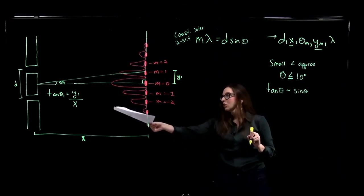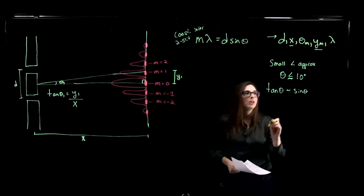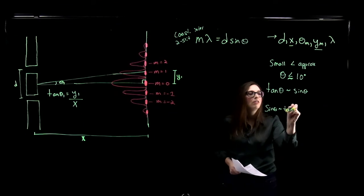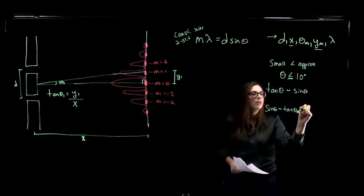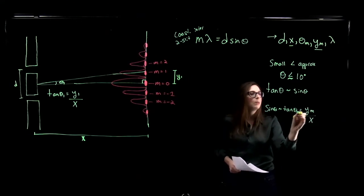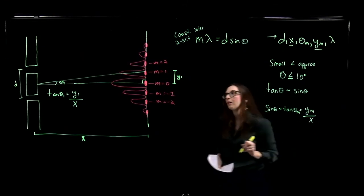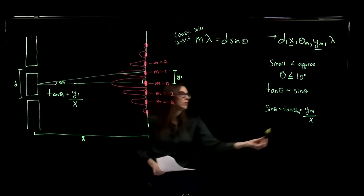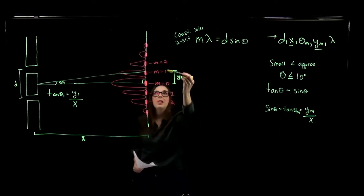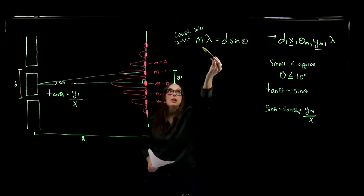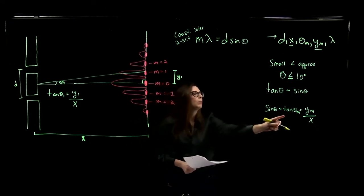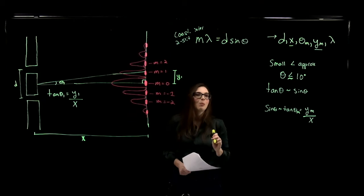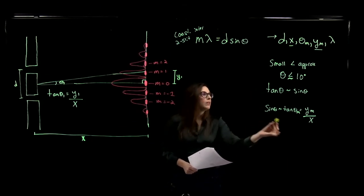From the geometry of our system, tangent of theta equals y over x. So we can use the small angle approximation to say that sine of theta is approximately tangent of theta sub m, which equals y sub m over x. Adding subscripts generalizes it for any bright point - for the first bright point use m equals 1 giving y sub 1, for the second bright point use m equals 2 giving y sub 2, and so on. Note this small angle approximation does not appear on your equation sheet.